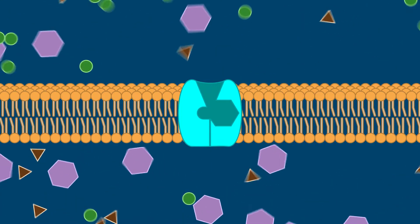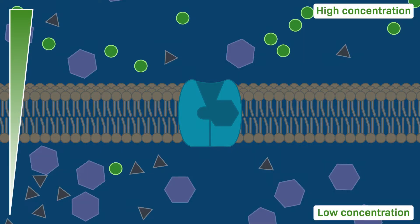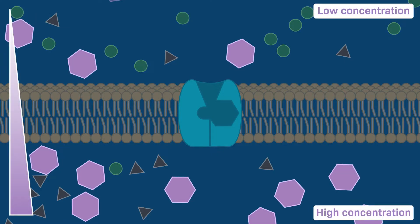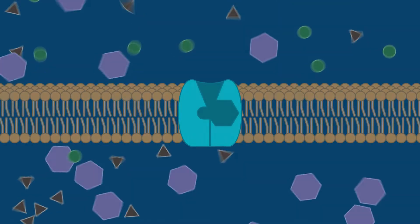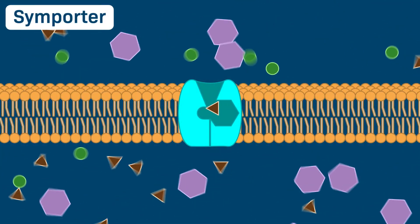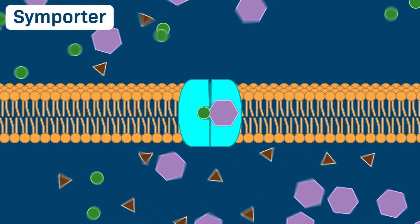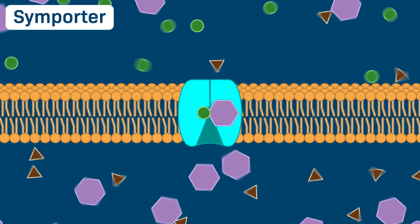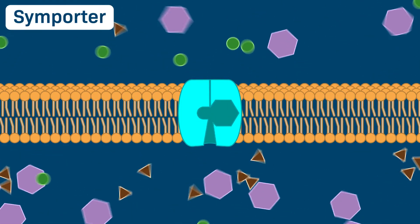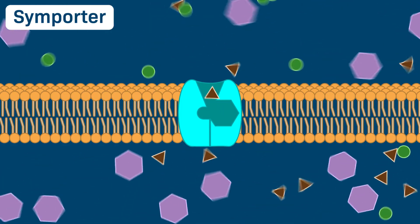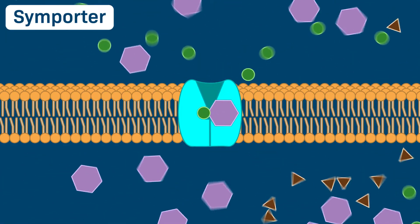Note that there are more of the green circles outside the cell than inside. On the other hand, there are more of the purple hexagons inside the cell than outside. The movement of the green circle solutes down their concentration gradient releases energy. This symporter uses that energy to pump the purple hexagons against their concentration gradient.